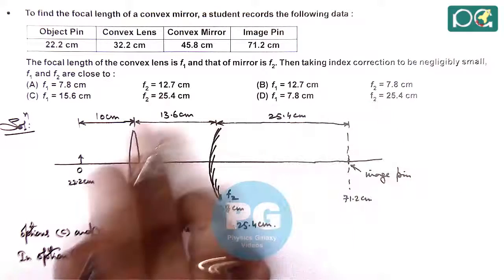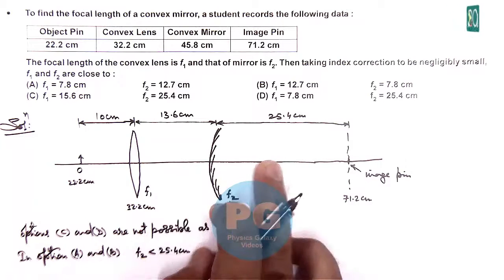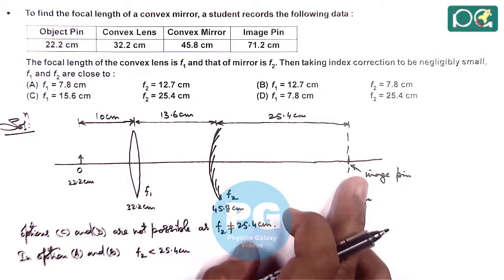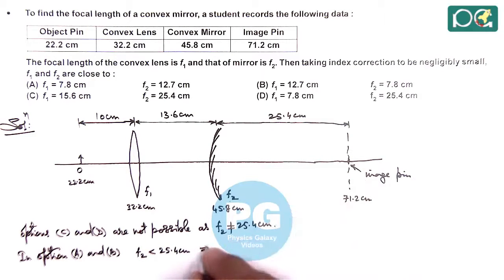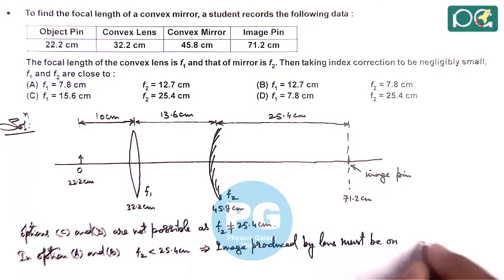f2, given value of f2 is less than 25.4 centimeter. That means the focal point of this mirror is located somewhere here. So image is obtained on the right side of focal length. Here we can see image produced by lens must be on right side of mirror.